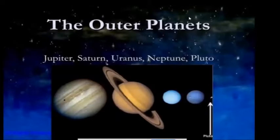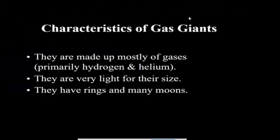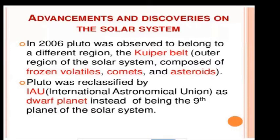The outer planets are Jupiter, Saturn, Uranus, Neptune, and also Pluto. The characteristics of the gas giants or outer planets are that they are made mostly of gases, they are very light for their size, and they have a lot of rings and many moons. Pluto was observed to belong to a different region — it is called a dwarf planet. According to the International Astronomical Union, Pluto, instead of being the ninth planet of the solar system, is classified as a dwarf planet.